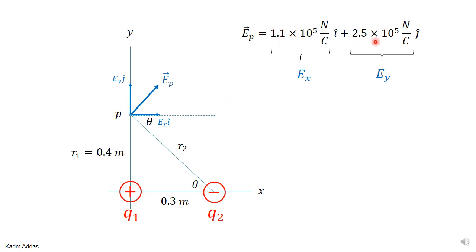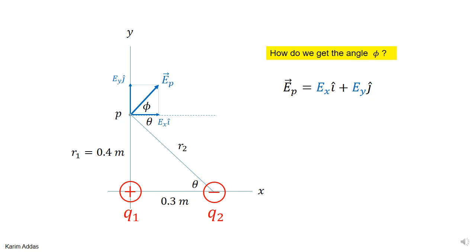Labeling Ex as the x component and Ey as the y component of the total electric field. If the problem asks for the angle phi between the total electric field and the x direction, note that phi is not the same as theta. Since the vector has components Ex and Ey, geometry gives tan(phi) = Ey / Ex. Substituting the known numerical values gives phi equal to 66 degrees.